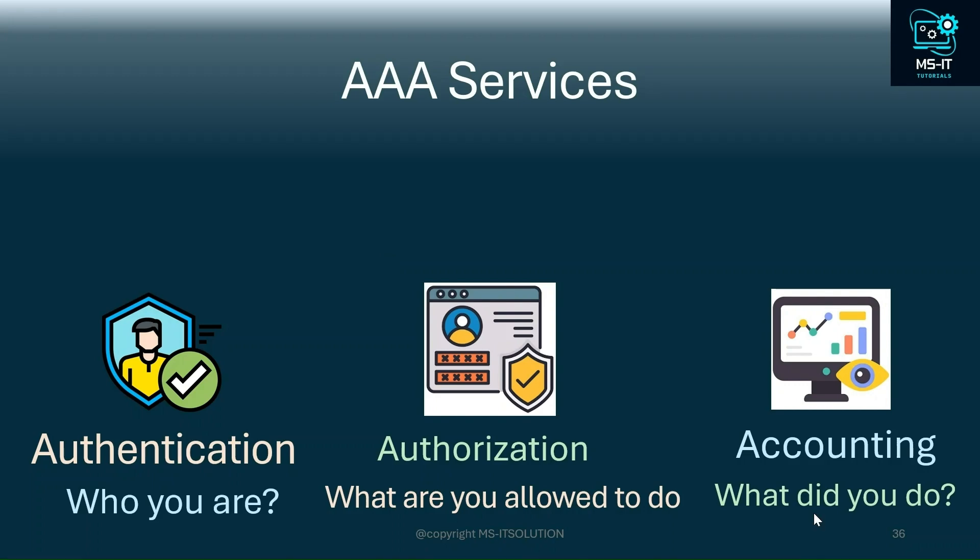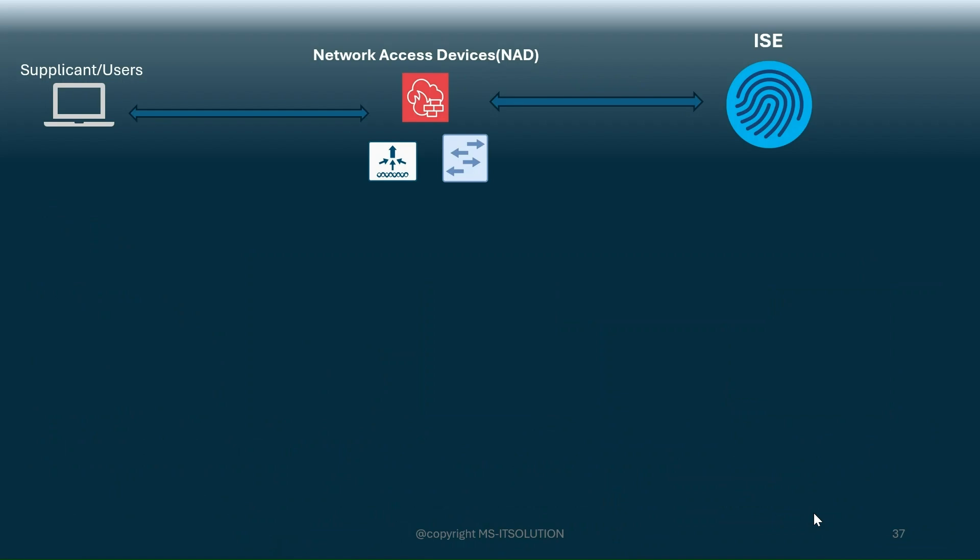Let's discuss AAA services in more detail. Authentication, authorization, and accounting. When doing 802.1X authentication, there are three main components in Cisco ISE: supplicants, network access devices, and Identity Services Engine. Your supplicants are your endpoints — your laptop, desktop, CCTV camera, printers, or IP phone. Network access devices are your wireless access points, wireless controllers, access switches, and VPN concentrators. ISE acts as the RADIUS server.